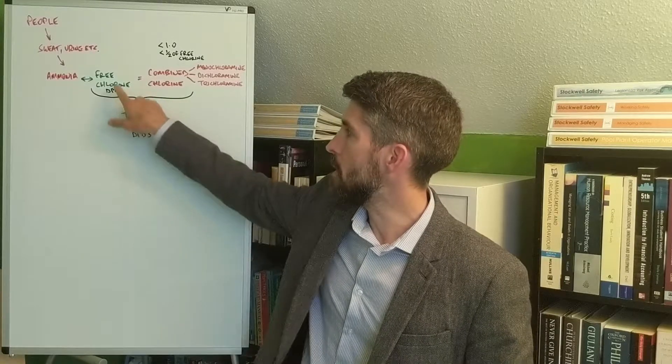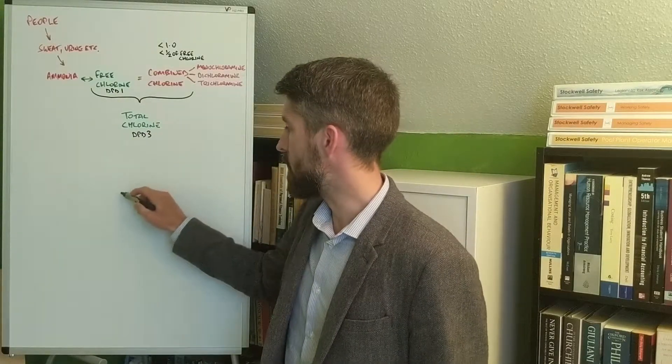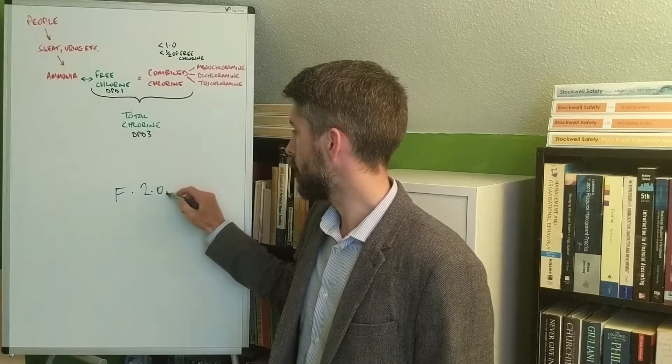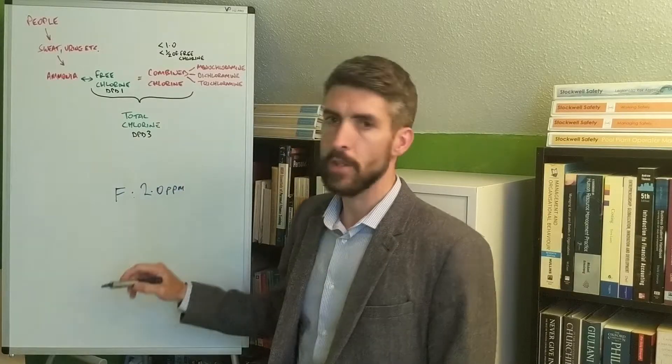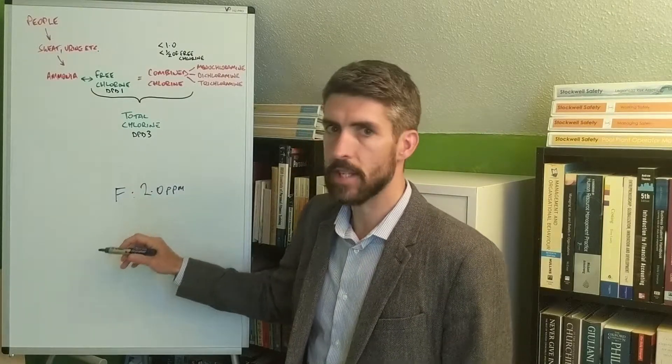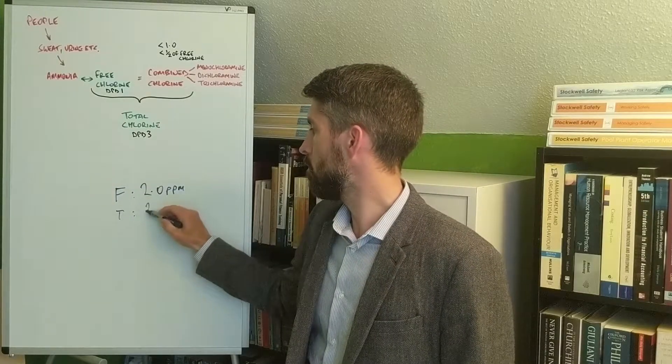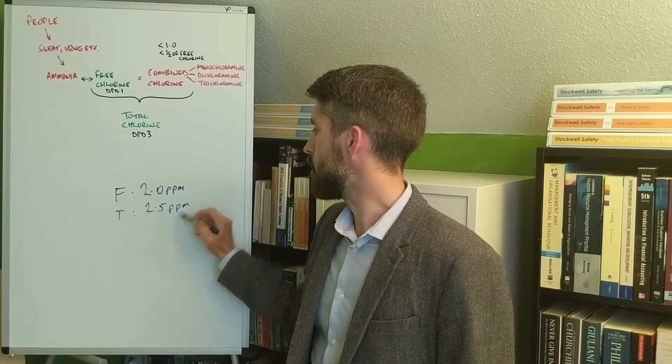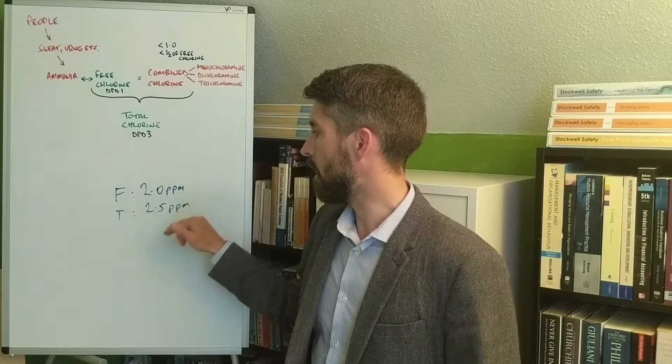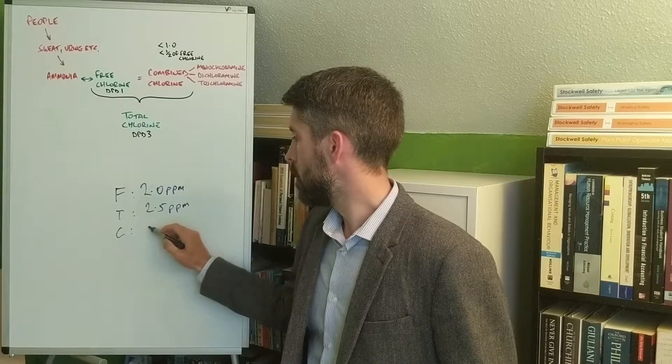For example, if you're doing a test and you get a free chlorine level of two parts per million on a DPD one test, and you follow that up with a DPD three test to find out how much total chlorine you've got, let's say you've got 2.5, the difference between the two, 2 to 2.5, is 0.5. That's the amount of combined chlorine.